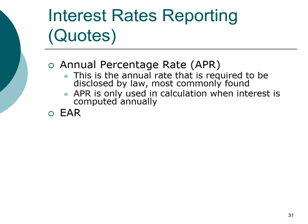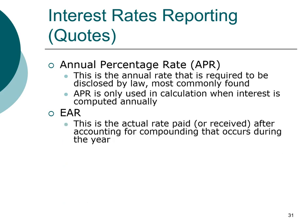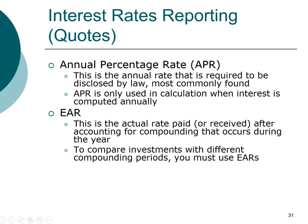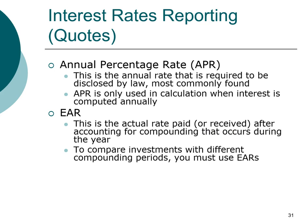An interest rate closely related to the APR is called the EAR, which stands for the effective annual rate. It's called the effective annual rate because this is the actual interest rate that you end up paying or receiving after you take into account compounding. The EAR is particularly important when comparing different investments or loans that have different compounding periods.